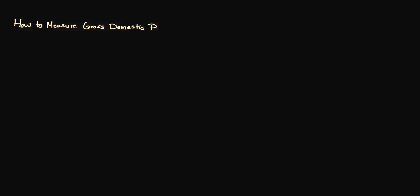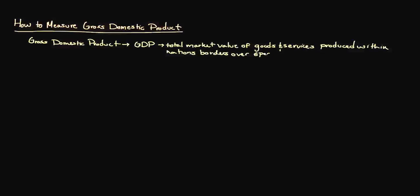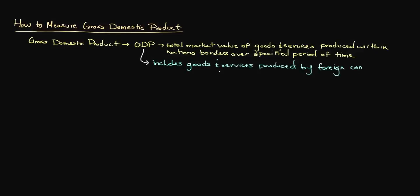Gross domestic product, often referred to simply by the acronym GDP, represents the total market value of finished goods and services produced within a nation's borders over a specified period of time. Unlike gross national product, GDP includes even finished goods and services produced by foreign companies, as long as those goods and services are produced within the country whose GDP is being measured. Calculated primarily on a quarterly and annual basis, GDP is commonly used to gauge the health of an economy.